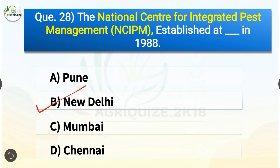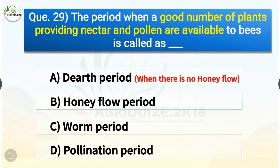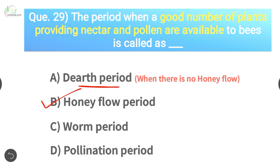Question number twenty-nine: The period when a good number of plants providing nectar and pollen are available to bees is called what? The correct answer is option B — honey flow period. The period when a good number of plants providing nectar and pollen are available to bees is called the honey flow period. When there is no honey flow, that period is called the dearth period.